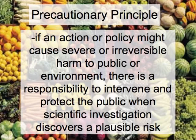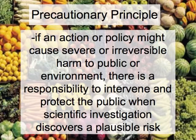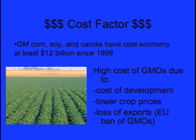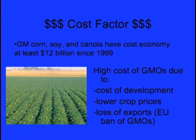The precautionary principle states that if an action or policy might cause severe or irreversible harm to the public or the environment, there is a responsibility to intervene and protect the public when scientific investigation discovers a plausible risk. Genetically modified corn, soy, and canola have cost the economy at least 12 billion dollars since 1999. The economic deficit resulting from the production of GMOs are due to factors such as cost of development, lower crop prices, and the loss of exports.